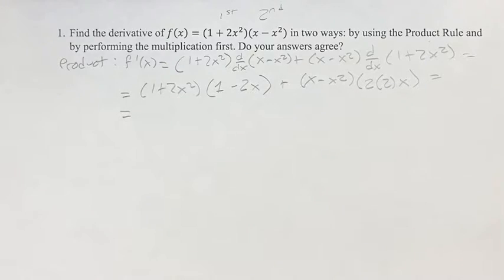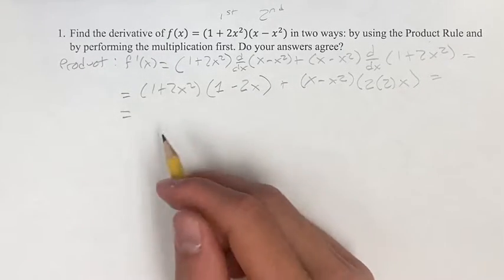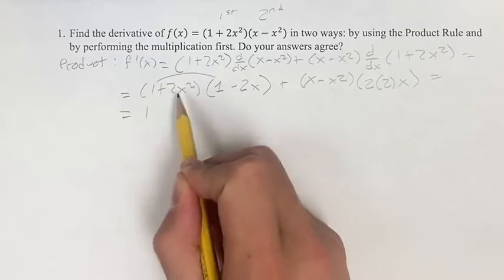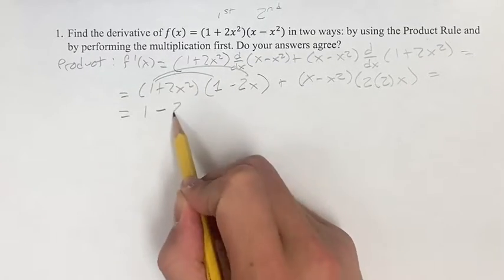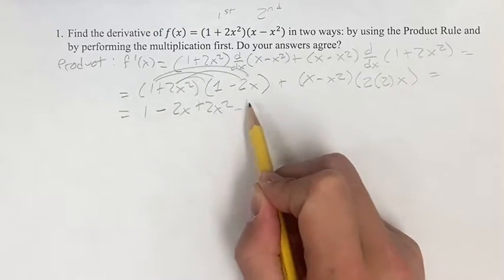Now, we can multiply these out and find the simplified version of the derivative. So we have 1 - 2x, plus 2x², minus 4x³...